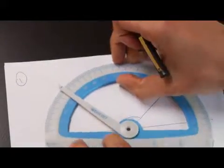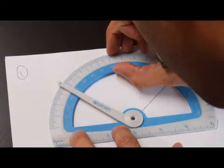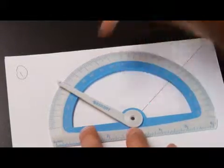First thing we do is put our protractor connected to the base of the line, and the center hole should be where the angle starts.